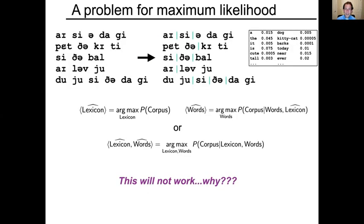If we start by examining the problem with maximum likelihood, it turns out there's a big issue for how it would deal with this problem. We have to transform the representation with no word boundaries to one with word boundaries, like in the middle right. Correspondingly, there would be a lexicon with probabilities associated with it. We can do this by first inferring a lexicon and then conditional on that lexicon inferring words, or we might jointly try to choose a lexicon and word sequence.